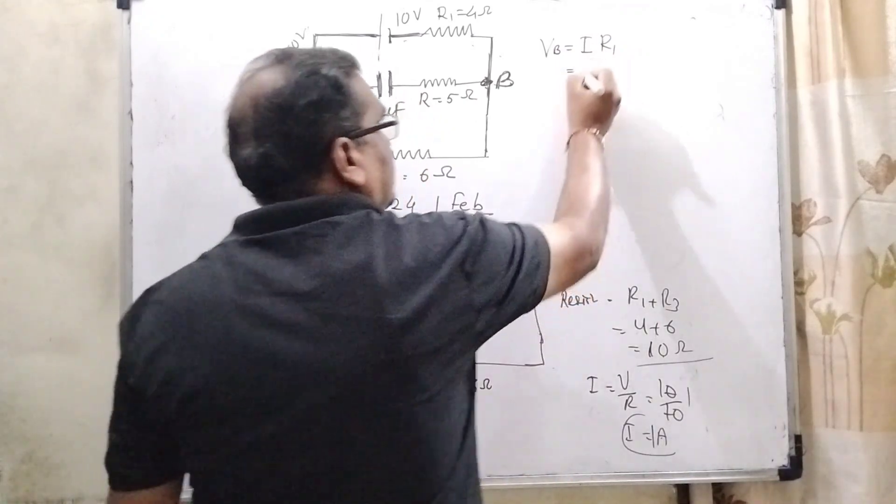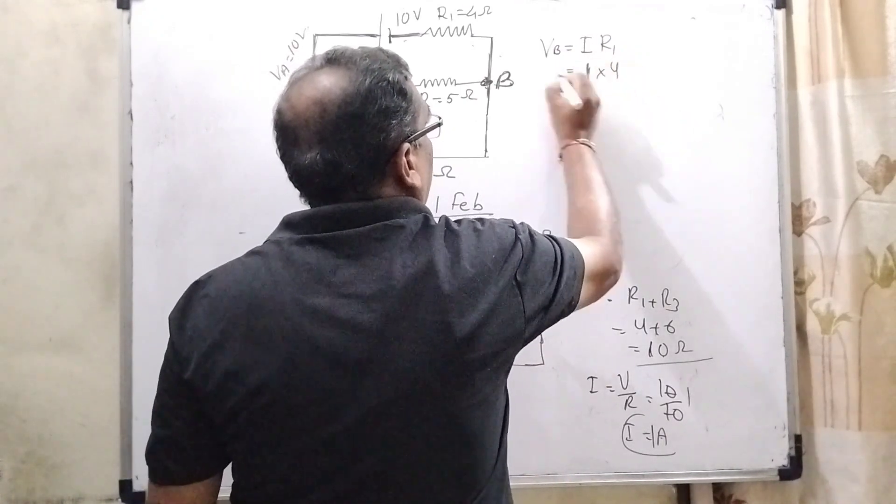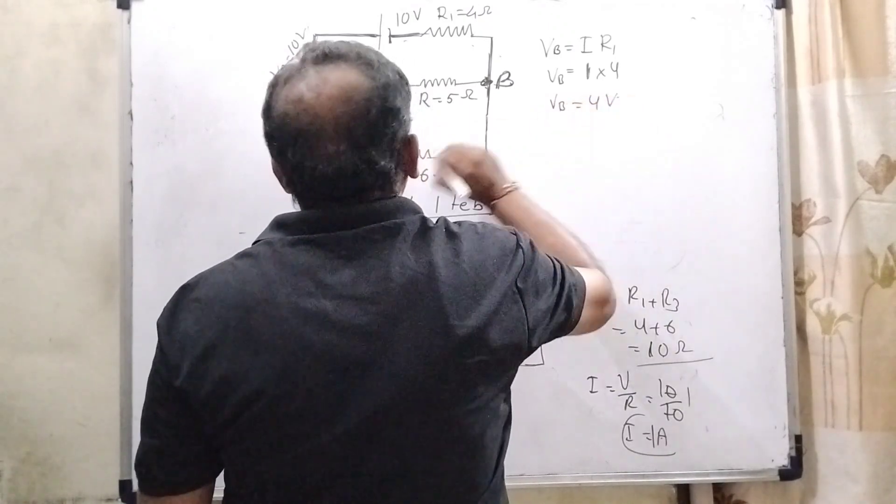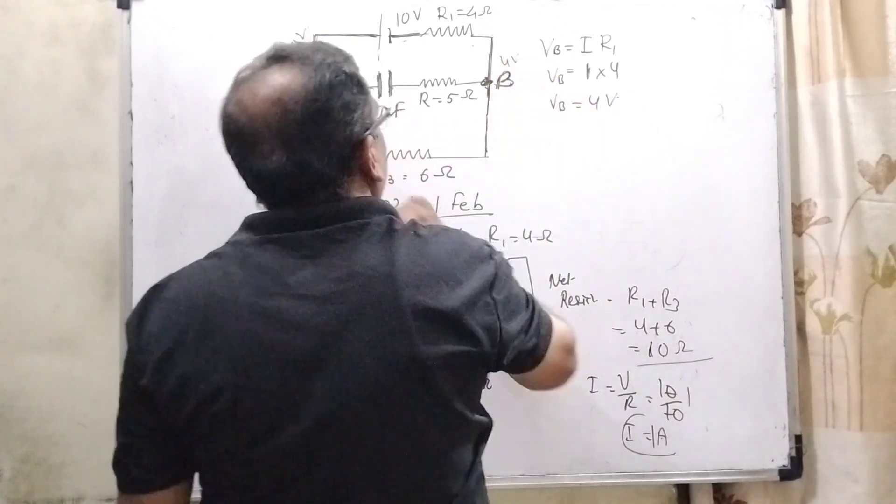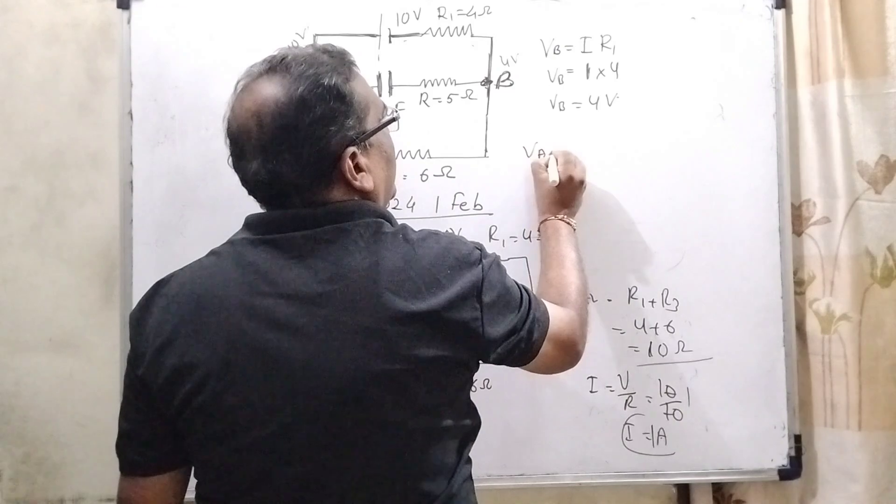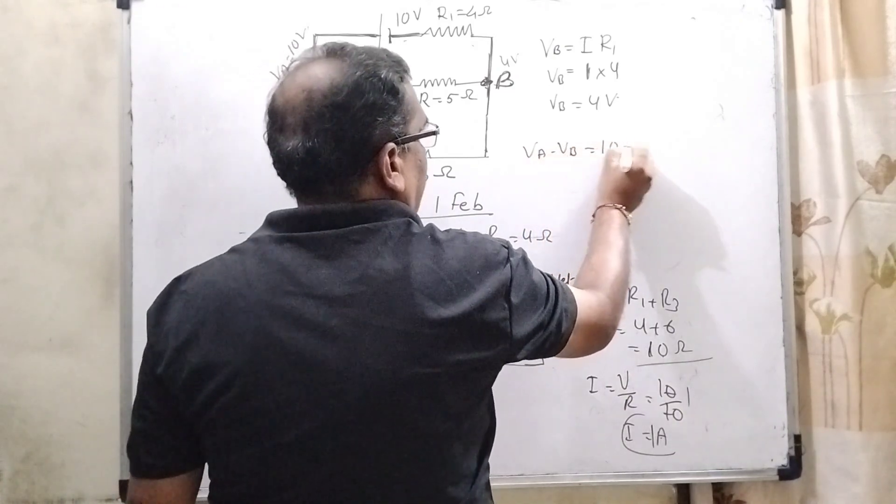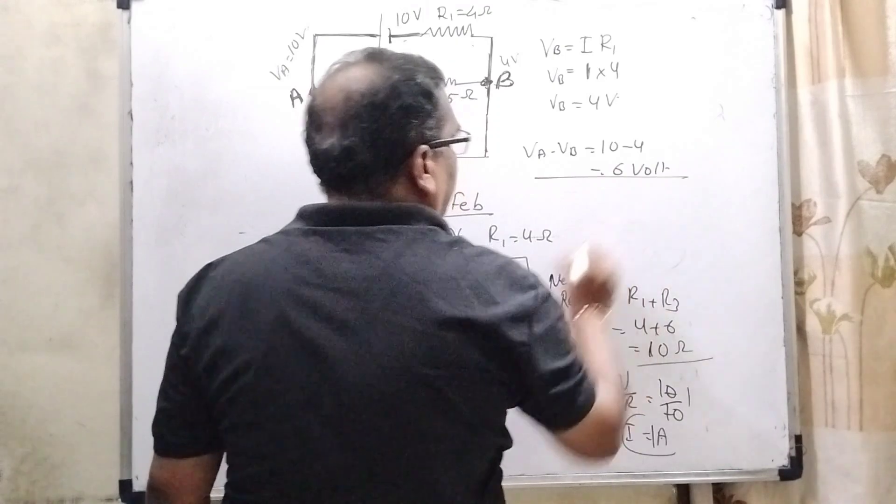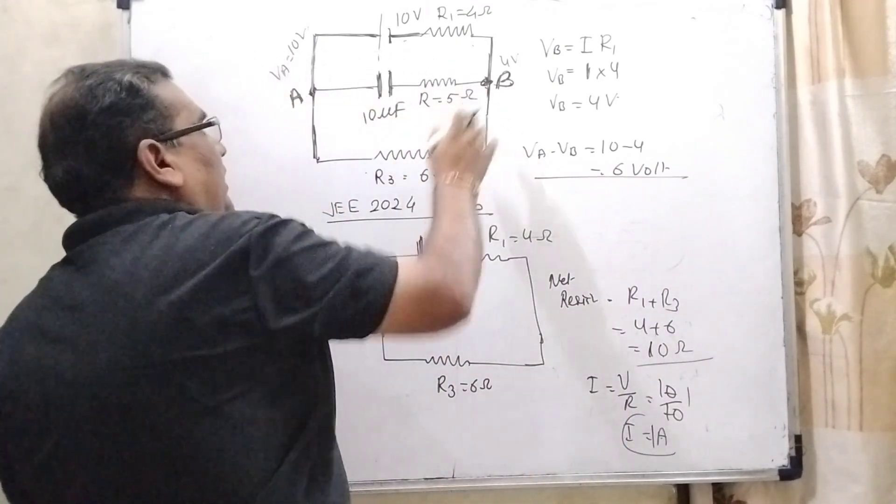So potential at the VB that is I and resistance R1. So current is 1 ampere. This is 4. So VB is 4 volt. And the potential difference VA minus VB that is 10 minus 4 that is 6 volt. So here we get the potential difference at the AB.